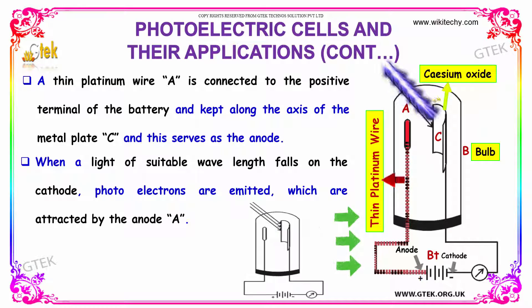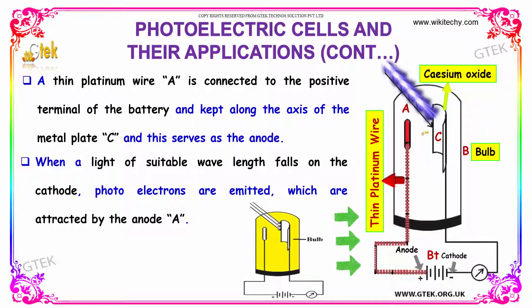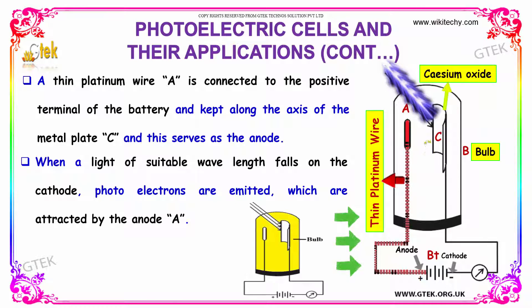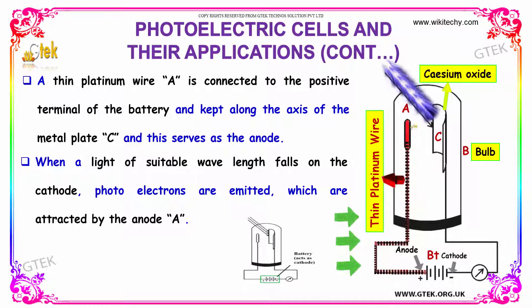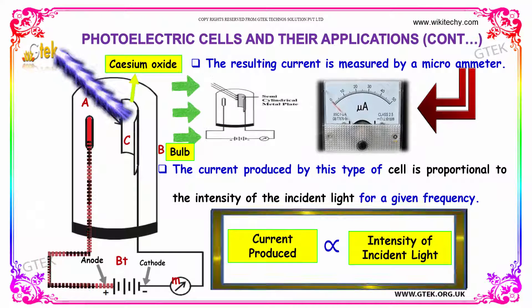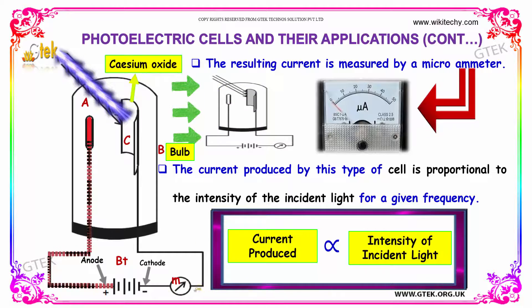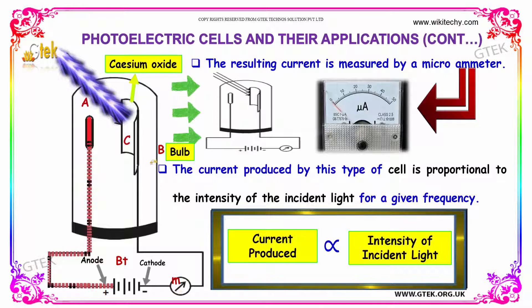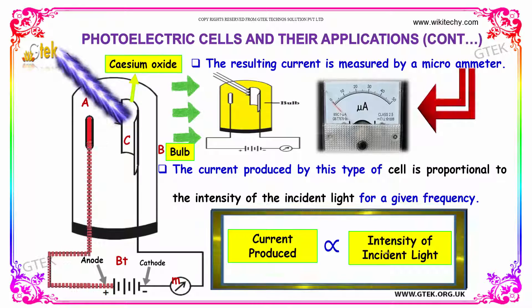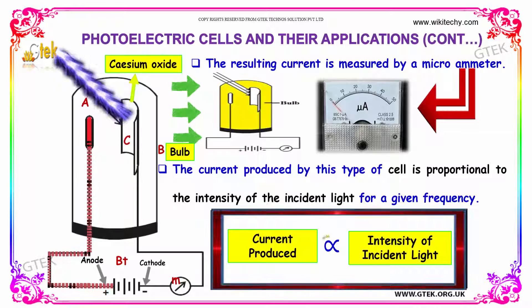When light of suitable wavelength falls on the cathode, photoelectrons are emitted, which are attracted by the anode, A. The resulting current is measured by a microammeter. The current produced by this type of cell is directly proportional to the intensity of the incident light for a given frequency.